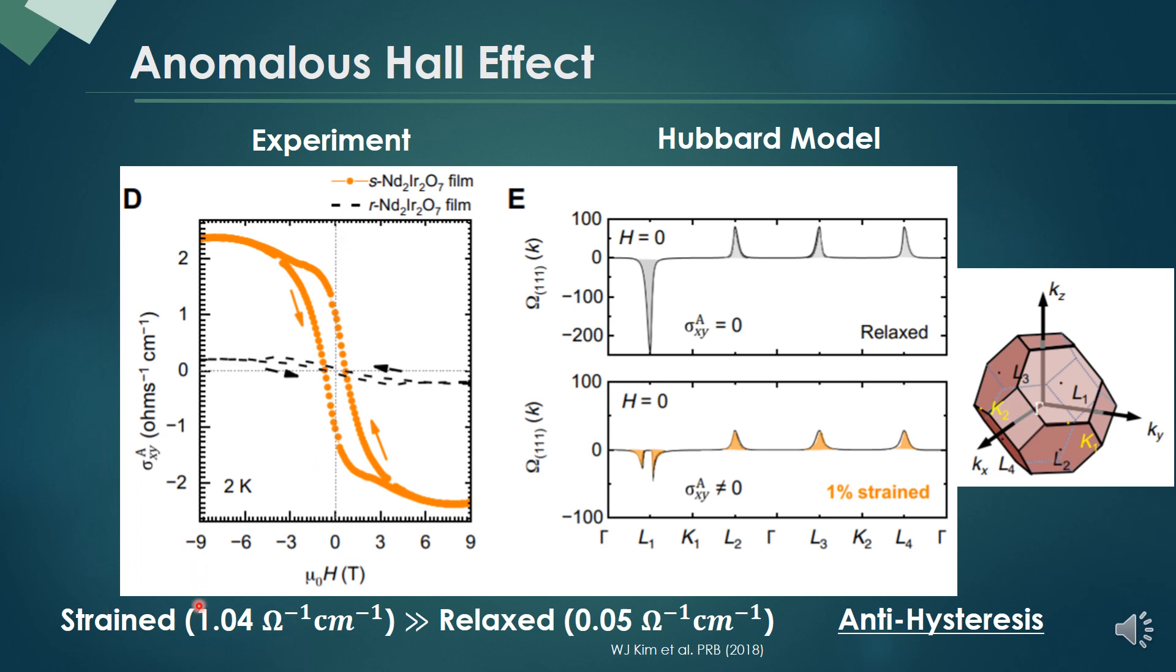This is because the cubic symmetry prohibits the Hall conductivity in the relaxed film, while in the strained film, the cubic symmetry is broken. Therefore, the anomalous Hall conductivity is finite.